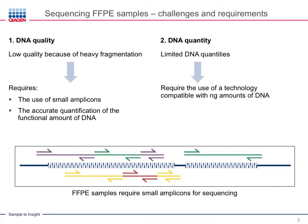As an example, amplicons of 150 base pairs on average are ideal to enrich targets from FFPE samples, since they are small enough to be used with fragmented DNA, yet yield enough read length to efficiently map and align reads. Furthermore, due to fragmentation, not all DNA is amplifiable or functional, so it is crucial that only functional DNA be accurately quantified. qPCR is the most sensitive method to accurately quantify functional DNA extracted from FFPE samples.